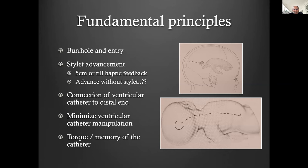These catheters and the valves always have some form of torque or memory. If you tunnel slightly laterally, no matter how accurately you place the catheter, it will get pulled medially or laterally depending on how you tunnel — so that also needs to be planned carefully. The basic principle when you implant these catheters is to minimize ventricular catheter manipulation. Once it's in, it must be kept there; if you move it around, that's always a bad thing.